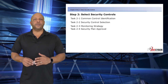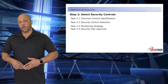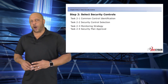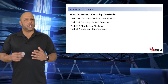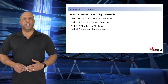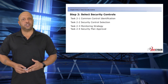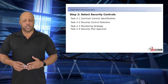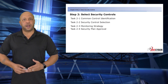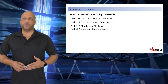When it comes to selecting security controls, there are four primary tasks: the common control identification, the security control selection themselves, the monitoring strategy, and the system security plan approval.